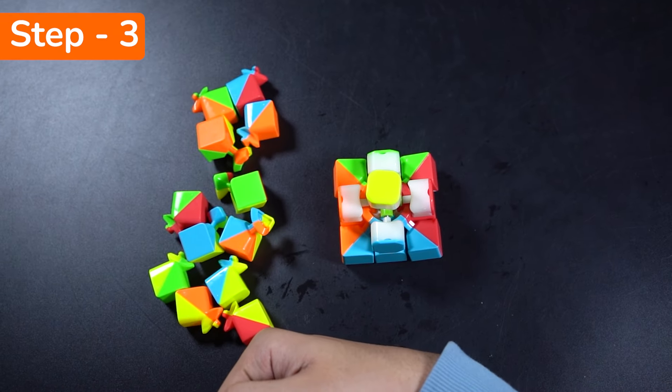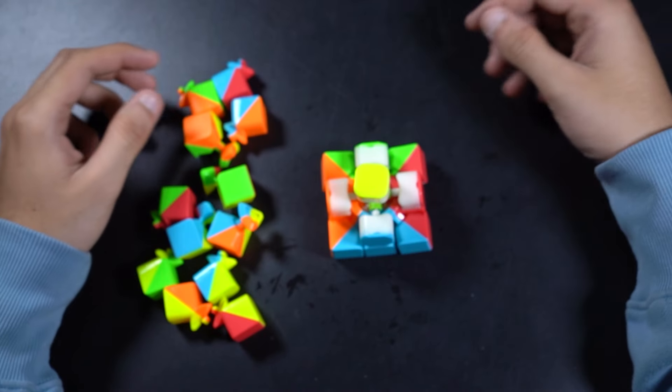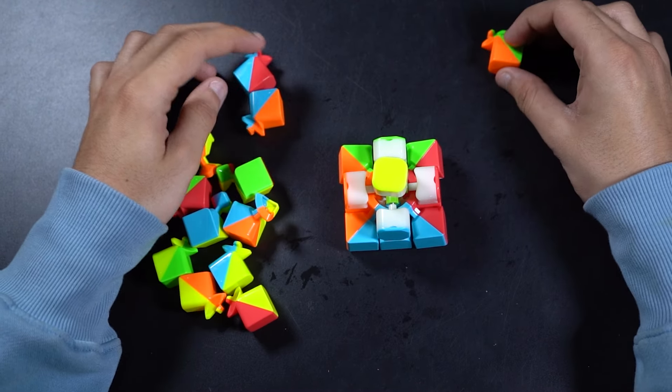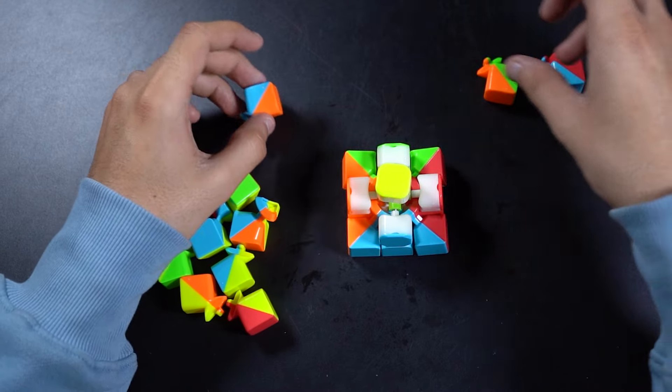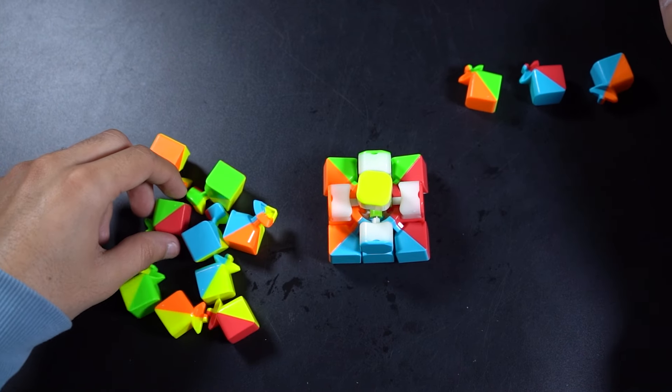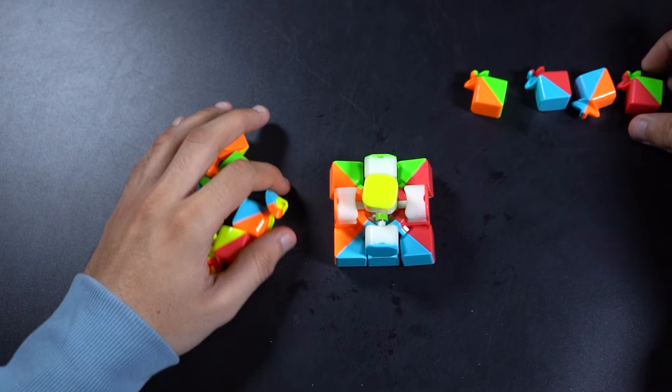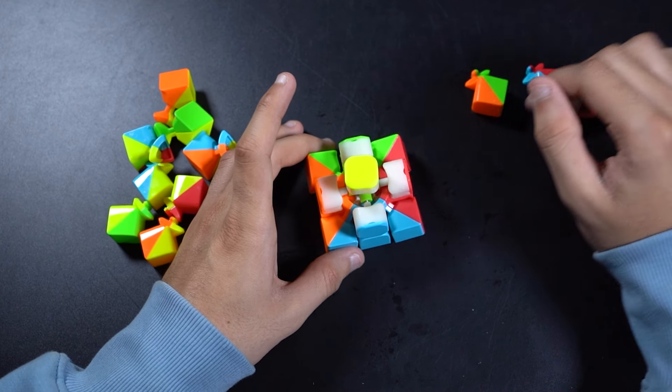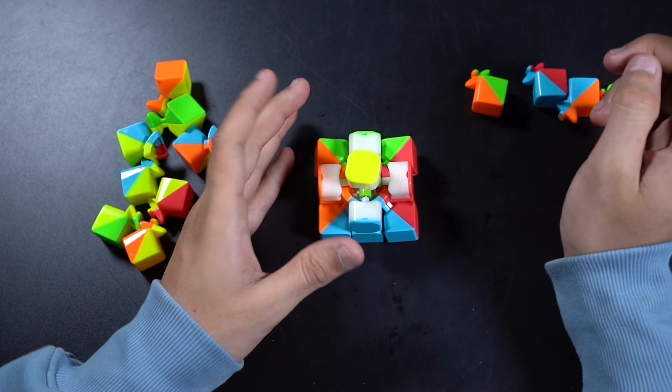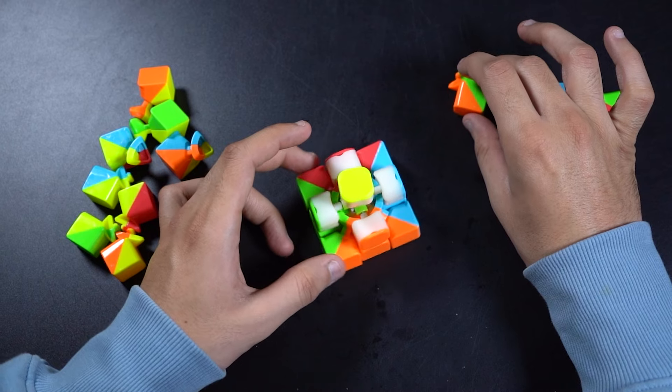So for the next step we take out all the pieces that don't have yellow on them. So for example this one, this one, this one, and this one. So these are the pieces to the middle layer of the cube or the second layer of the cube. So we are going to insert them one by one.